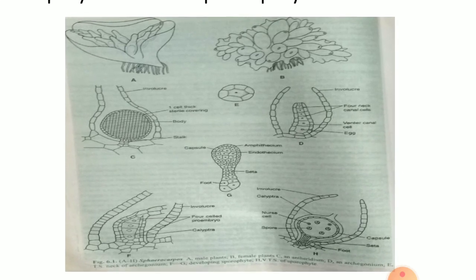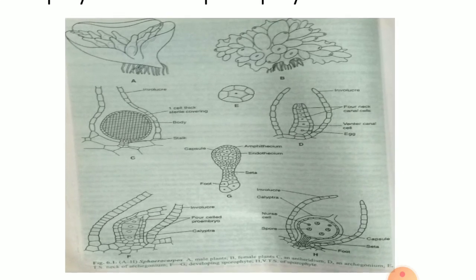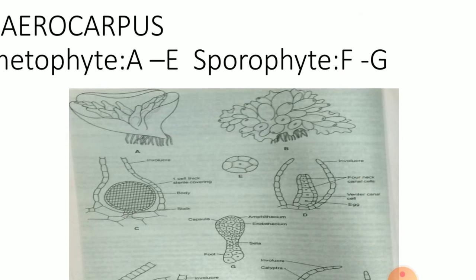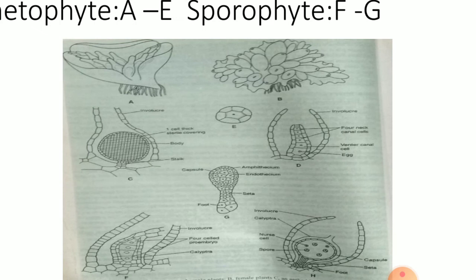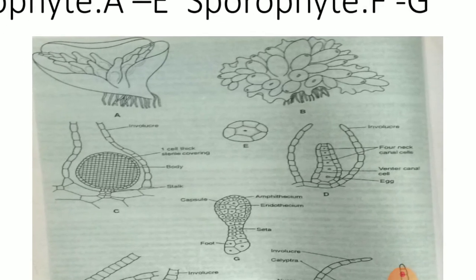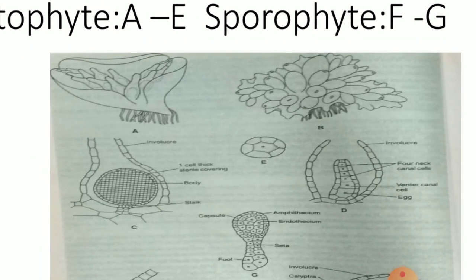Now we will be first taking the gametophyte portion of Sphaerocarpus. Students, this refers to the figures A to E. Now, external morphology of the thallus.